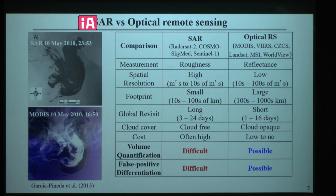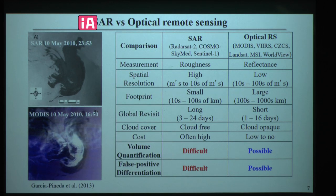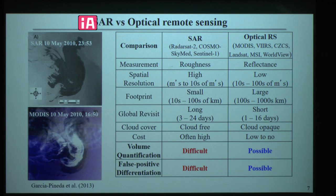SAR and optical remote sensing have their own pros and cons. SAR usually has higher spatial resolution, a smaller footprint, and a long revisit period. Optical remote sensing usually has lower resolution, larger footprint, and shorter revisit period. SAR measures in microwave so it's cloud-free, while optical remote sensing measures in visible wavelength and shortwave infrared, so it's cloud-opaque. SAR usually costs high, while optical remote sensing has low to no cost.